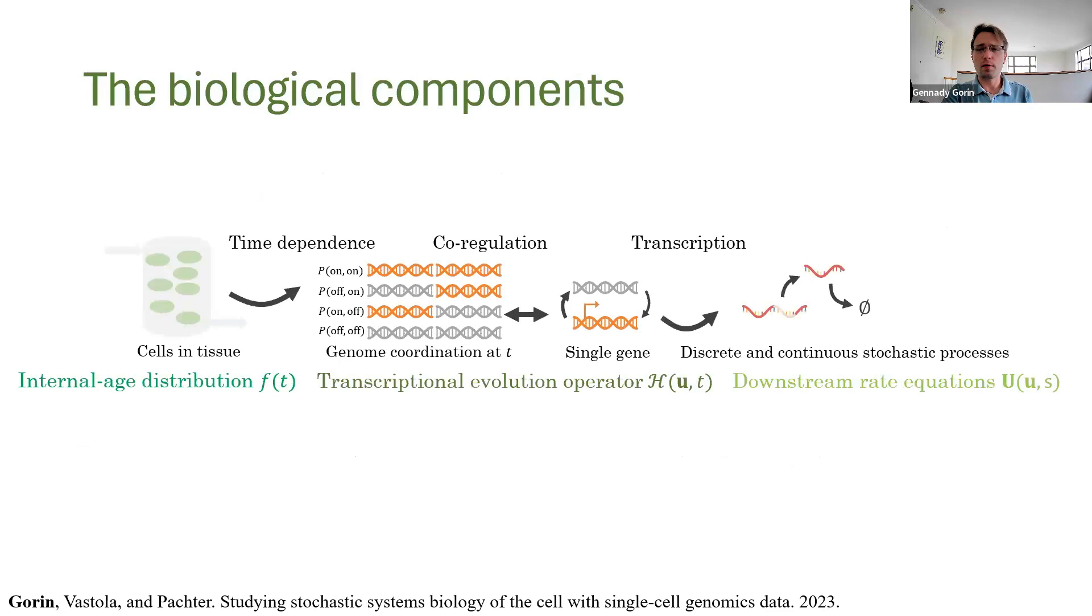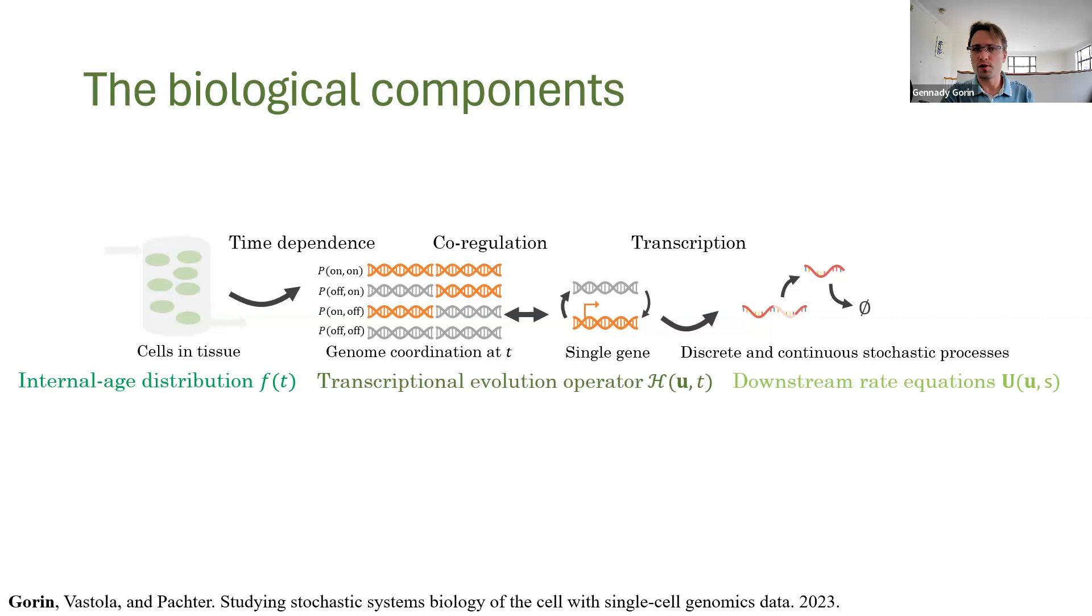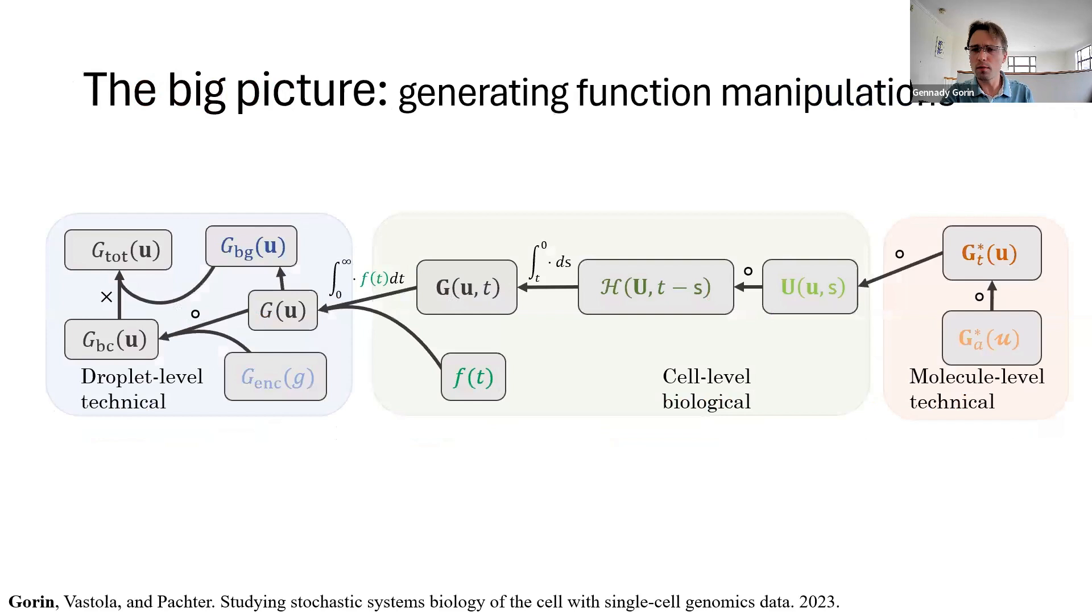And it turns out we can go very generic. And first, we write down a very general formulation of the physics with promoter switching, downstream processing, translation, and so on. We can also account for some RNA-velocity-style transient phenomena. Then we write down a very general formulation of technical noise. We've already seen part of this, but we would typically also like to account for noise in microfluidics, encapsulation, background molecules, and so on.